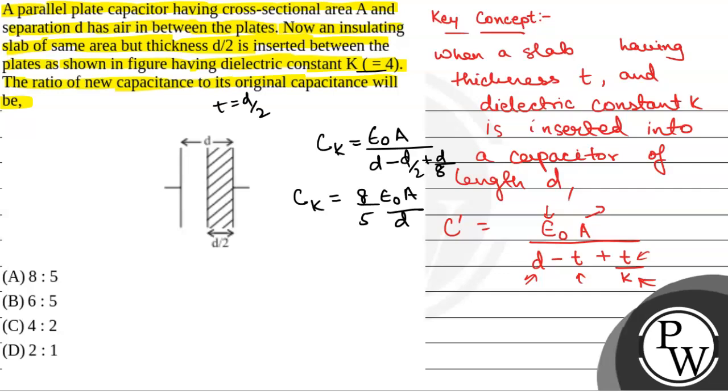On solving this, we get 8 by 5 epsilon 0 a by d. Now, epsilon 0 a by d is the original c, so ck equals 8 by 5 c.